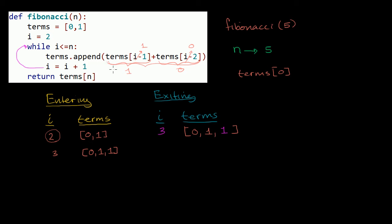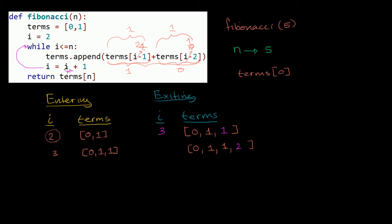We're going to add something to terms. It's terms[i-1] + terms[i-2]. i is 3, so i-1 is 2 — the second indexed element in terms [0, 1, 1] is 1. And i-2 is 1 — the first element in terms is also 1. So it's 1 plus 1, which is 2. We append 2 to terms. Then i is equal to i plus 1: 3 plus 1 is 4, so the new i is 4.